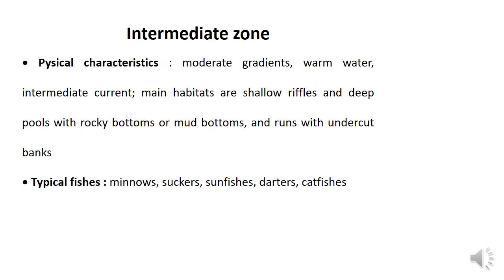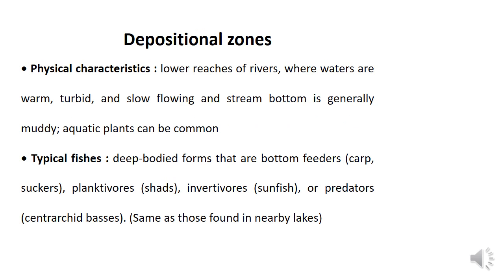Intermediate zones are characterized by moderate gradient, warm water, and intermediate current, with main habitats of shallow riffles, deep pools with rocky or muddy bottoms, and runs with undercut banks. Fishes present include minnows, suckers, sunfish, darters, and catfishes. Depositional zones are the lower reaches of rivers where waters are warm, turbid, and slow-flowing with a generally muddy bottom and common aquatic plants. Typical fishes include deep-bodied bottom-feeders like carp and sucker, planktivores like shad, invertivores like sunfish, and predators like largemouth bass.